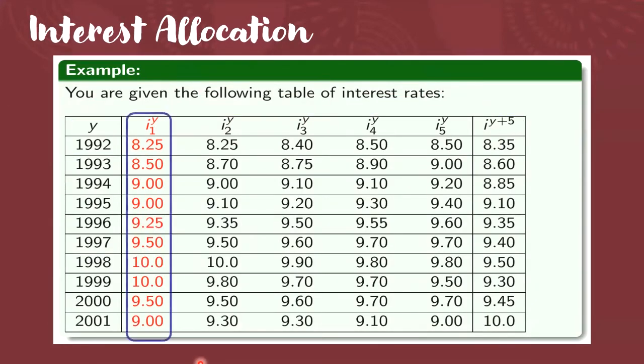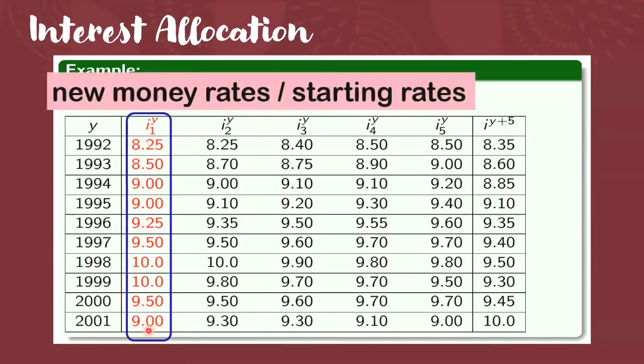More on this table. Do you see this? Itong mga naka-red. Ito yung I_1^y. Why? They are new money rates or starting rates. Sila yung ibinibigay na beginning rates sa mga new investor. And they are usually competitive rates. Why? To attract new investors. Tingnan niyo. Compare niyo ito. Ano nga ulit ito? This one. Diba? Ito ay rate. Ito ay portfolio rate. Okay? In the year 1997.